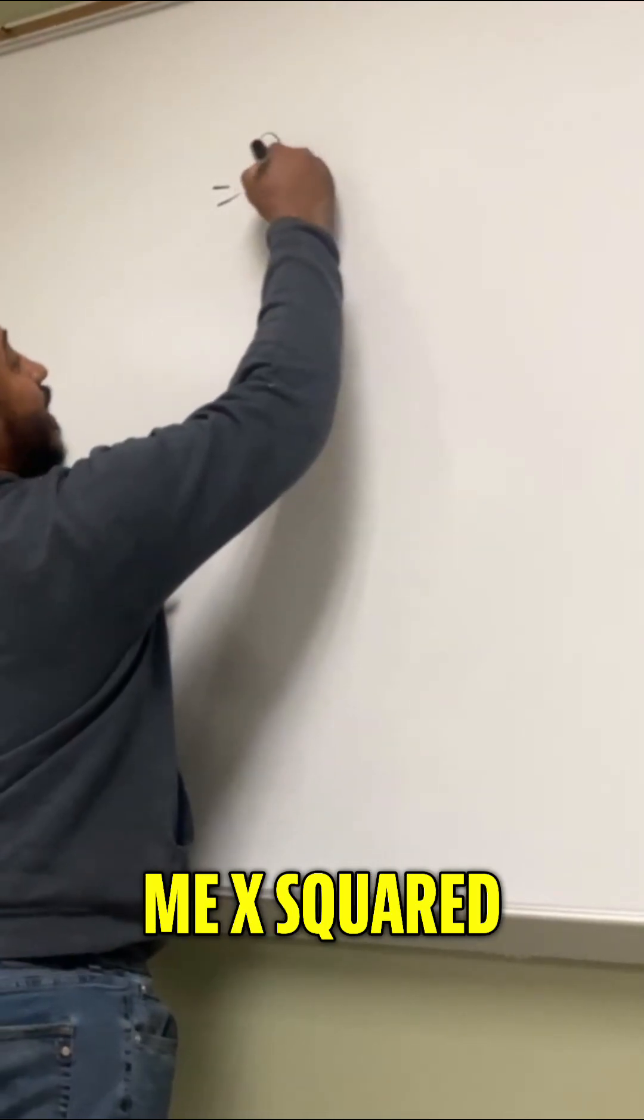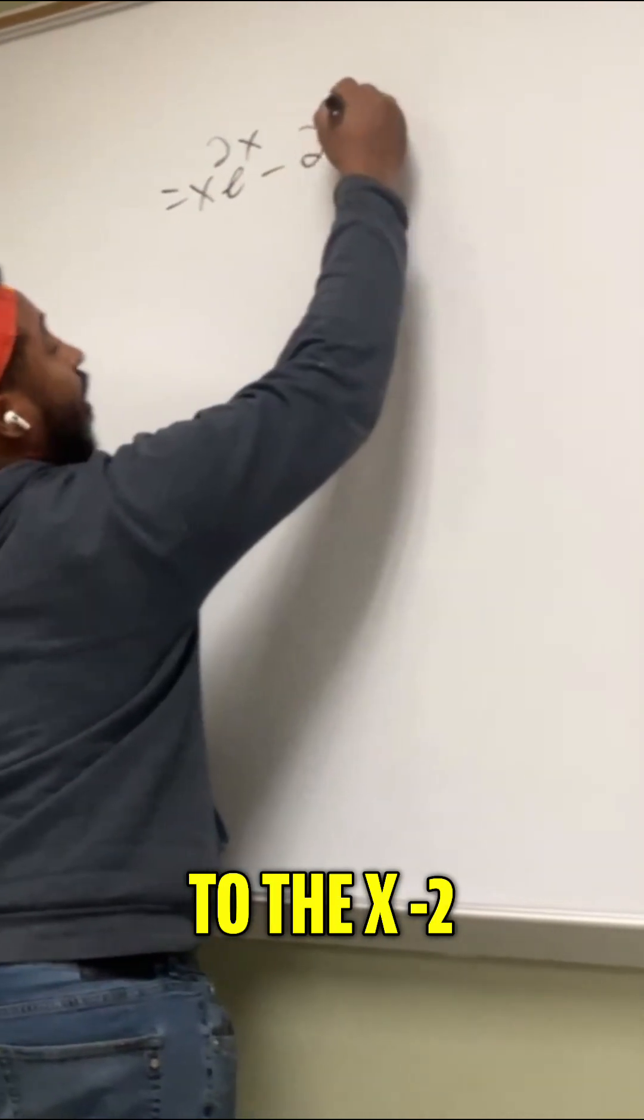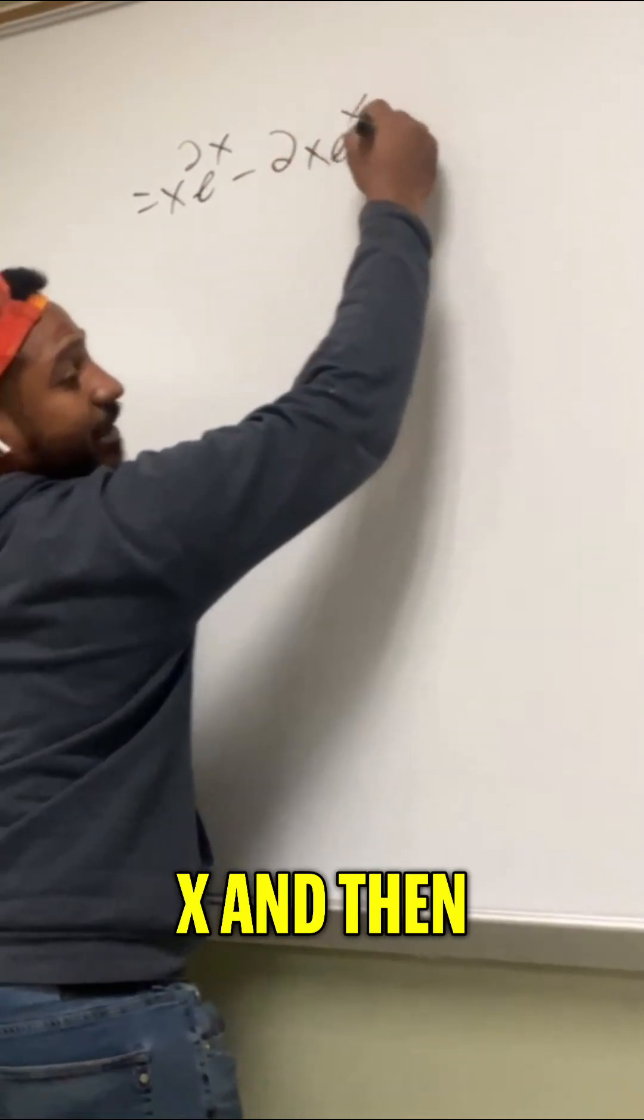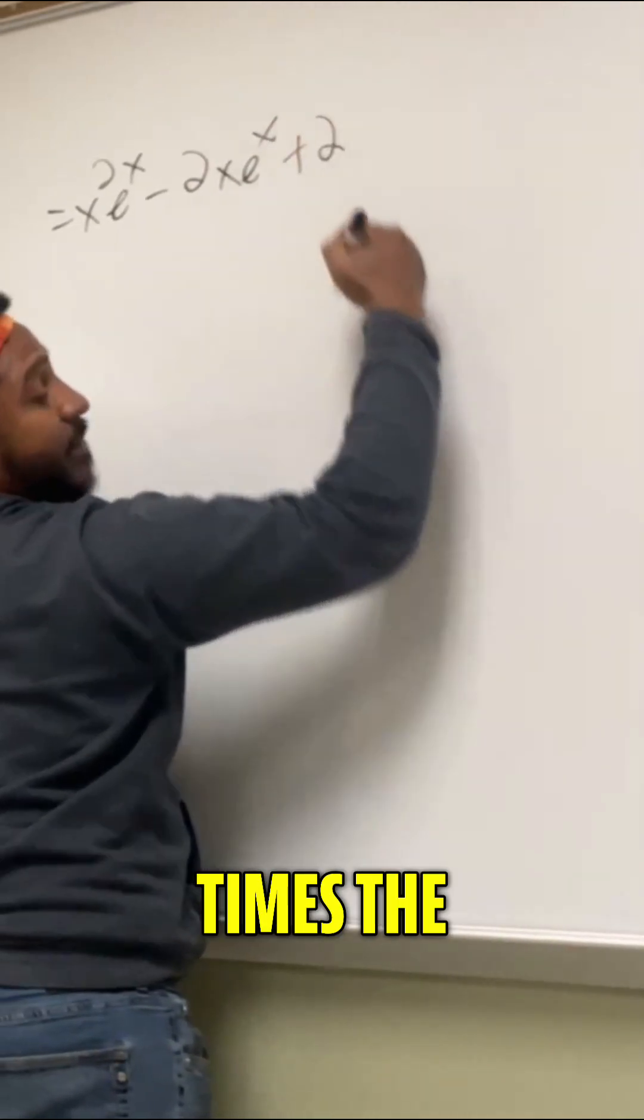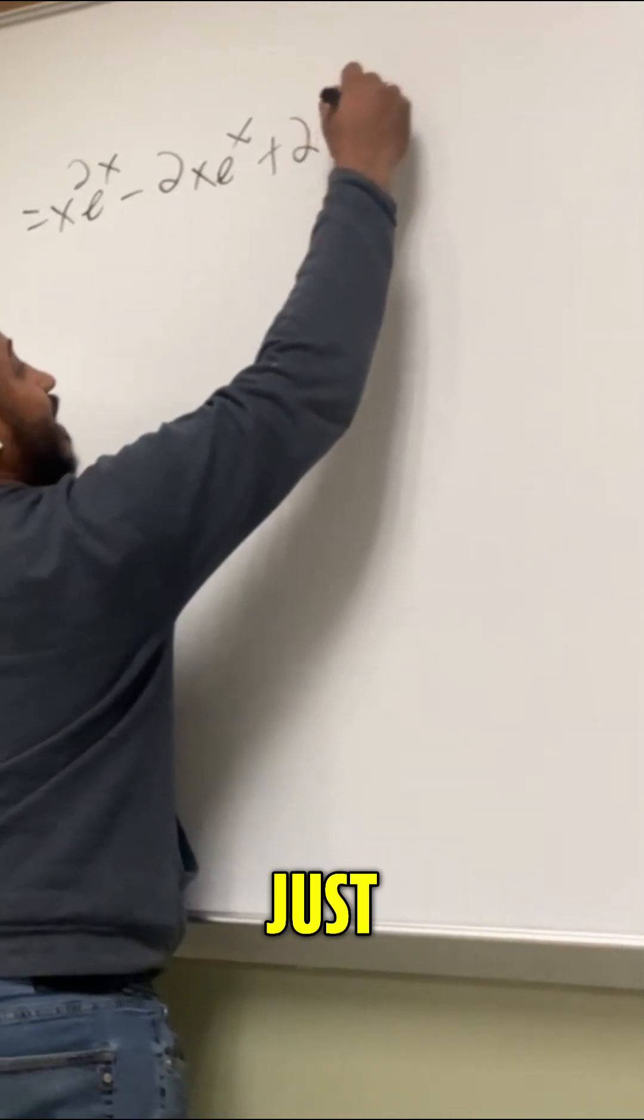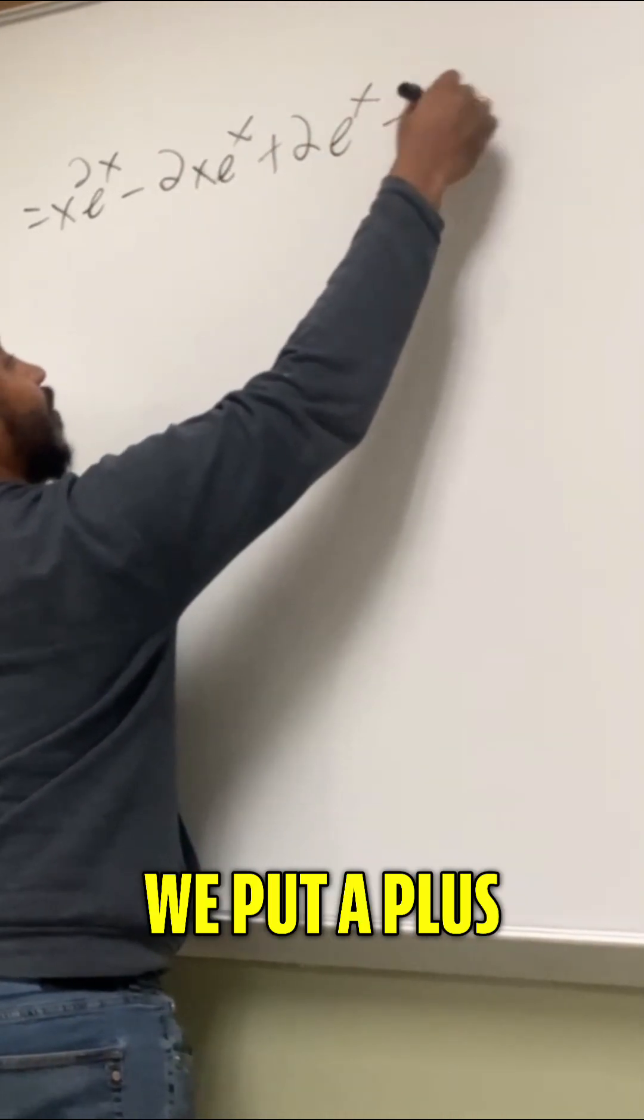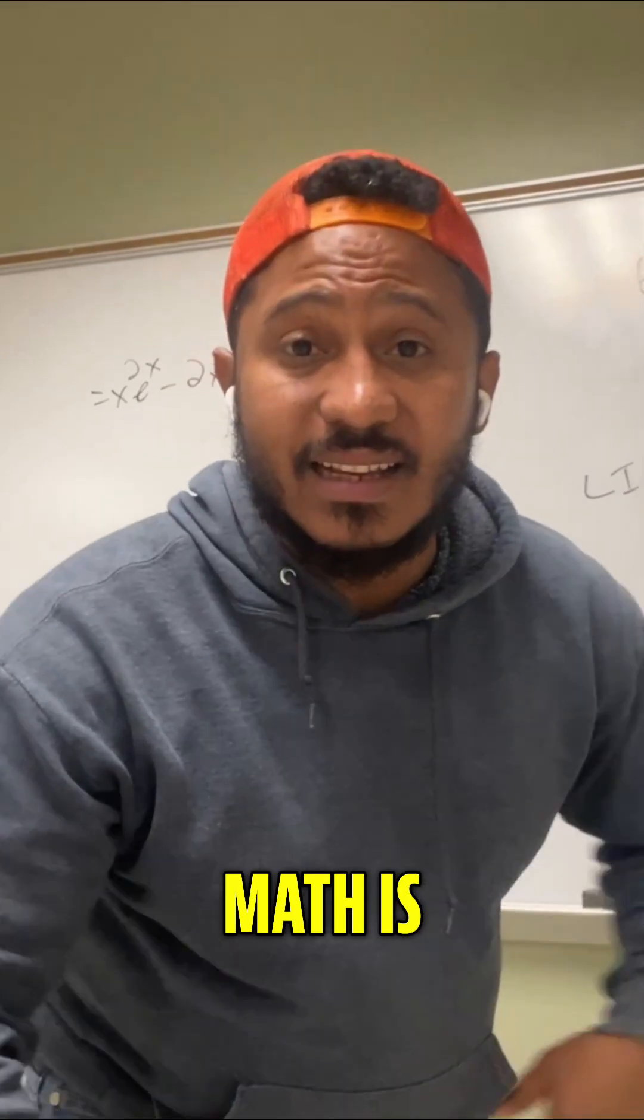So lastly, our solution. So that would be x squared e to the x minus 2 of x e to the x, and then plus 2 times the integral of e to the x, which is just e to the x. So now that we're done integrating, we put a plus c at the end. Always remember, math is everywhere.